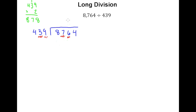That's okay — guessing wrong is a part of this process. We erase our 878 and our 2, and we know the answer is going to be 1. So we put 439 down here and go ahead and do our subtraction. That becomes a 16 as that becomes a 6, so 16 minus 9 is 7, 6 minus 3 is 3, 8 minus 4 is 4.